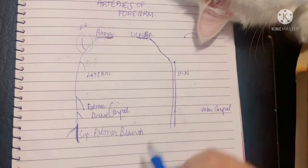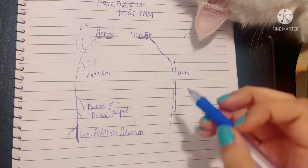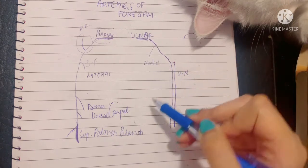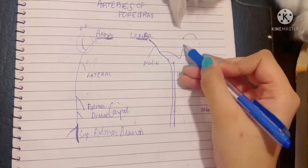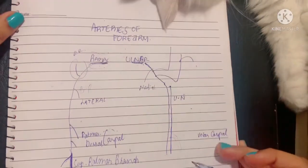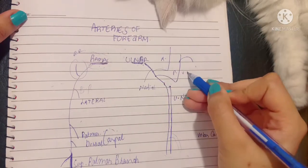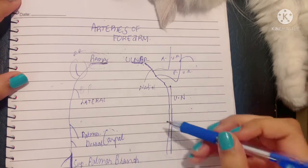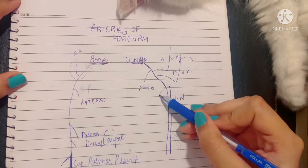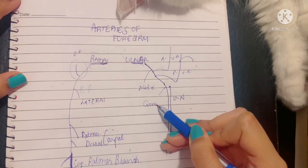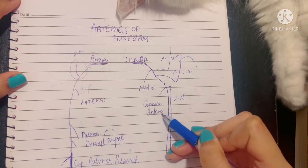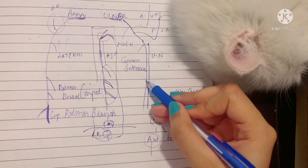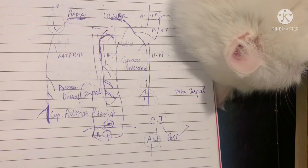The ulnar artery is responsible for the main blood supply of the forearm. Its branches include: muscular branches to the medial muscles of the forearm; the anterior and posterior ulnar recurrent branches, which take part in the anastomosis of the elbow joint; the common interosseous artery, which gives the main blood supply to the forearm; and palmar and dorsal carpal branches.